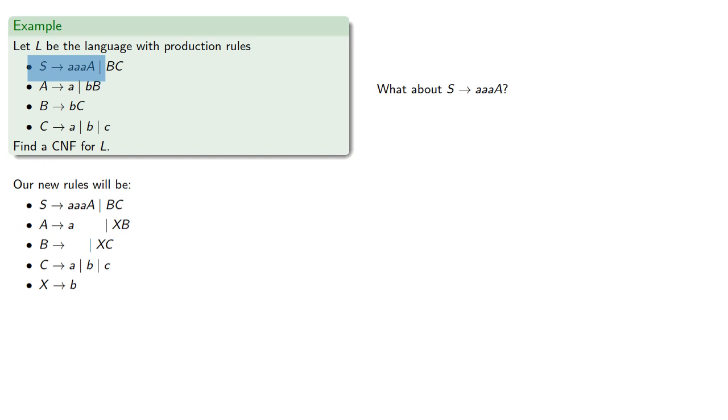What about S produces AAAA? We could produce this as S produces ZA produces AAAA, which has new rules S produces ZA, which is in Chomsky normal form, and Z produces AAA, which is not.